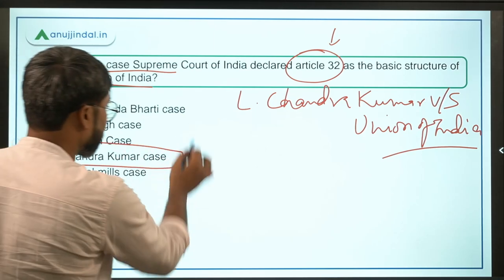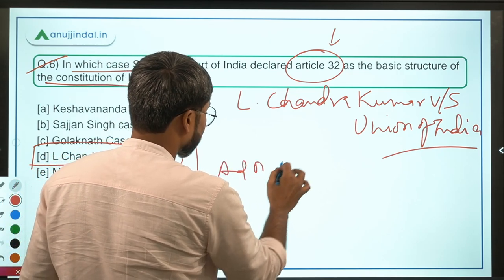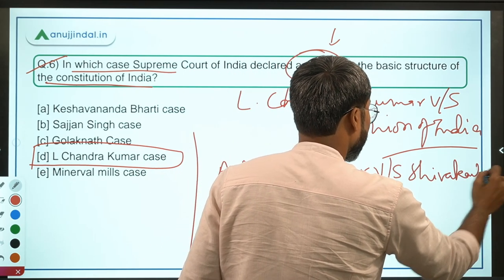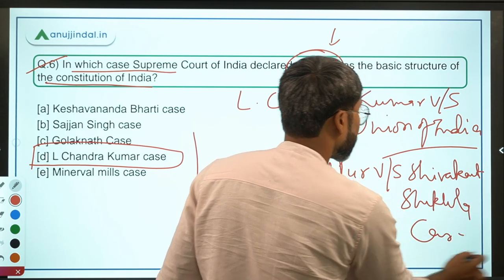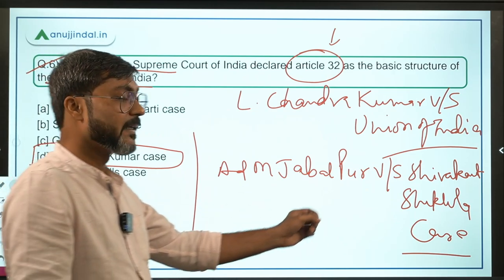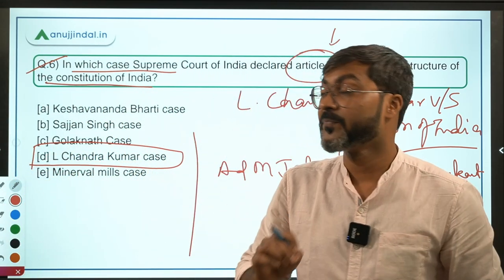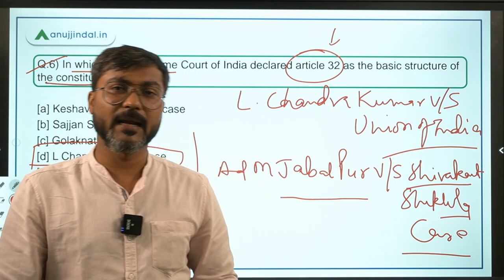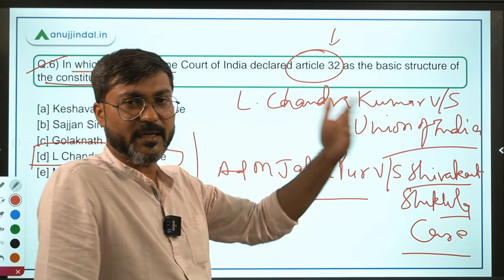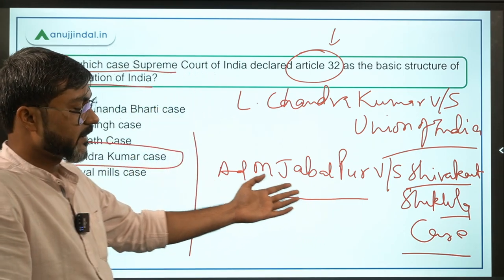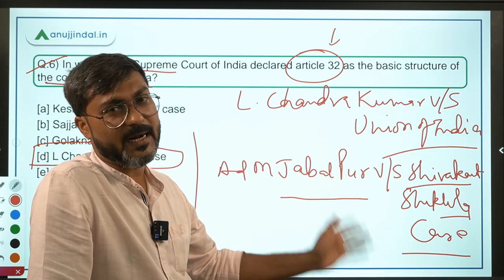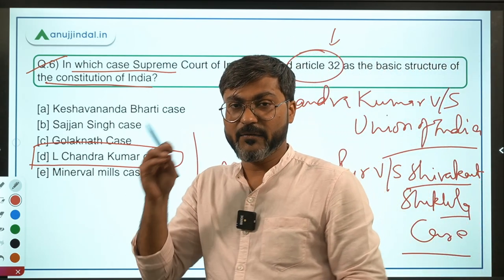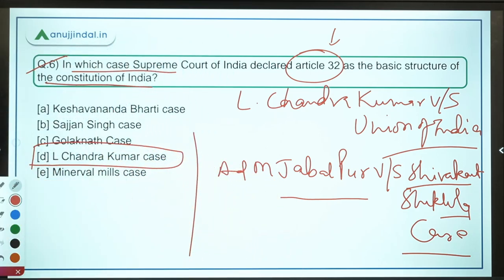In the L. Chandrakumar versus Union of India case, the Supreme Court confirmed Article 32 as the basic structure — so option D is the correct answer. Also remember the ADM Jabalpur versus Shivakant Shukla case, where the Supreme Court opined that Article 32 could remain suspended during the National Emergency, meaning there is no enforceability of Fundamental Rights during a National Emergency.